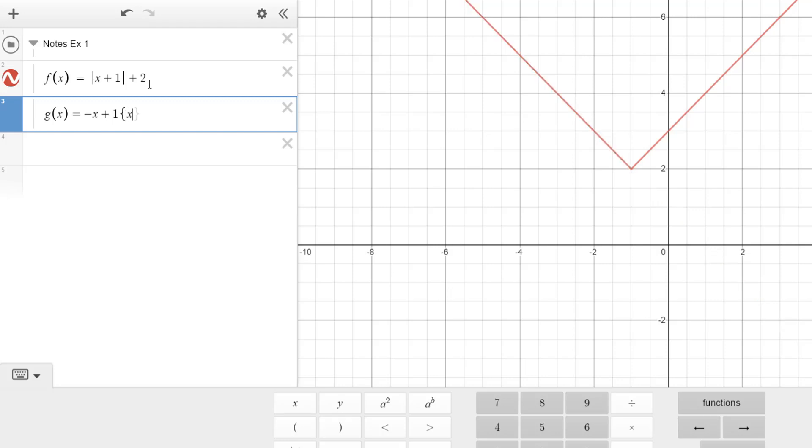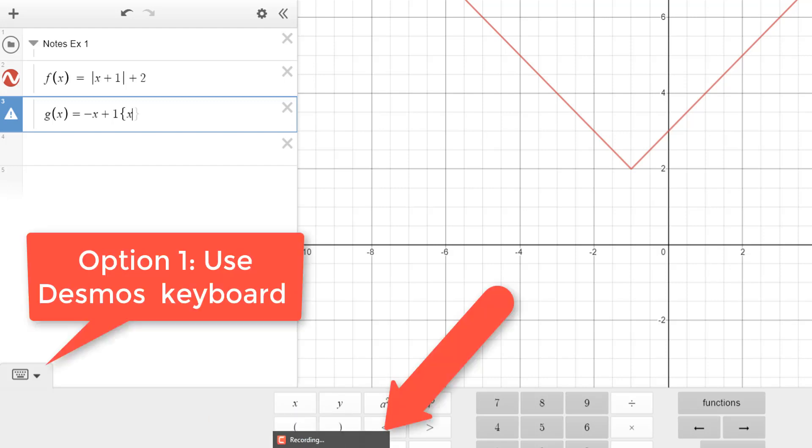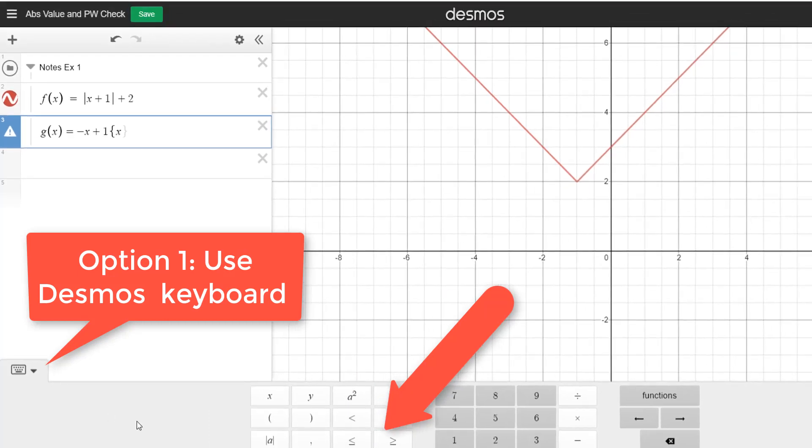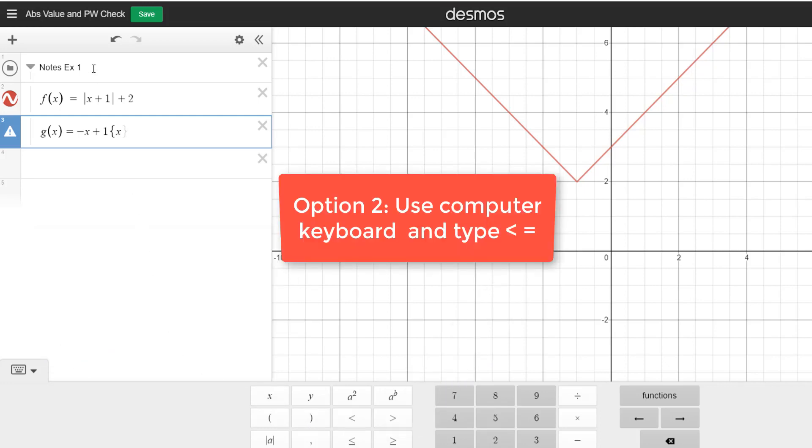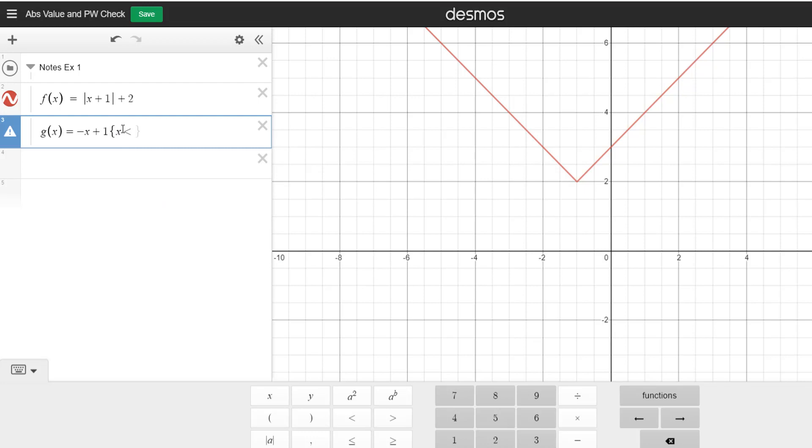And then we're going to type x is, now you can use a couple different keystrokes. You can either go right down here and use the keystroke there. That's one option for you. You can do that. Or you can actually hit the less than key and then the equal key on your keyboard. Either one of those will get you to open that spot. So we're going to add that less than equal to negative 1.